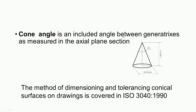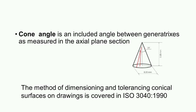The cone angle is the included angle between generatrices as measured in the axial plane section. For a conical part, the included angle between two generators is called the cone angle. The method of dimensioning and tolerancing conical surfaces on drawings is covered in ISO 3040:1990 standard.